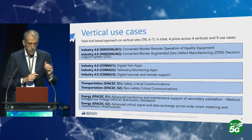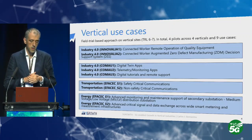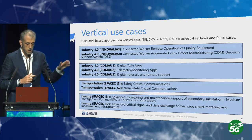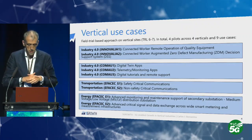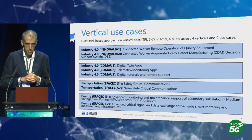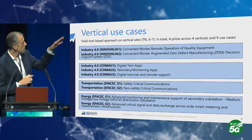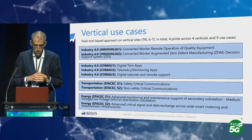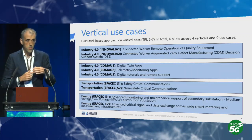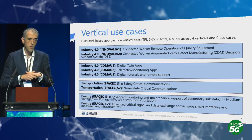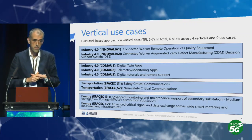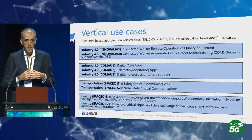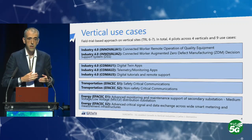Regarding the vertical use cases, we aim to do field trial tests at TRL 6 and 7 on nine different use cases split across the different vertical pilots. For Industry 4.0 in Innovalia, we have two use cases around connected remote operation — allowing the control and monitoring of manufacturing facilities from remote locations, which requires transmitting large amounts of information and pre-processing at the edge.